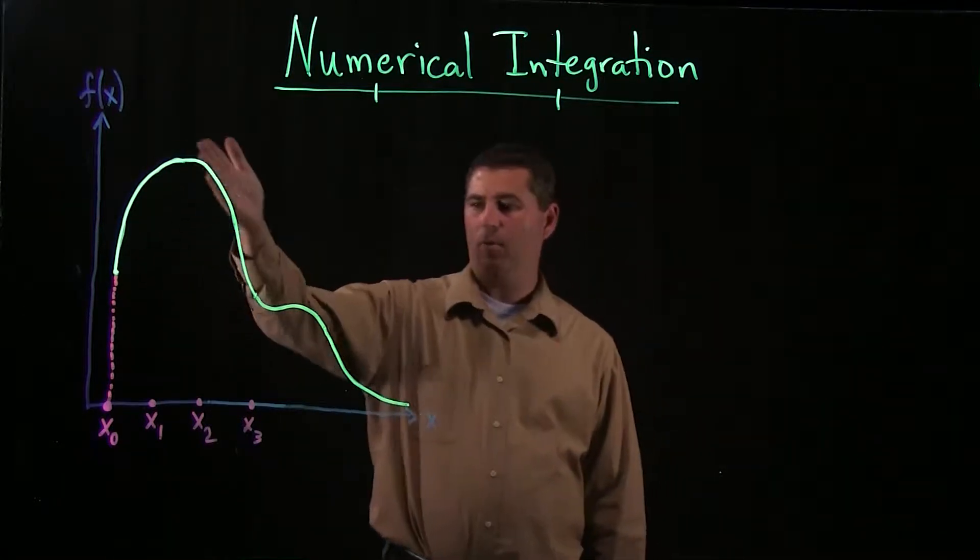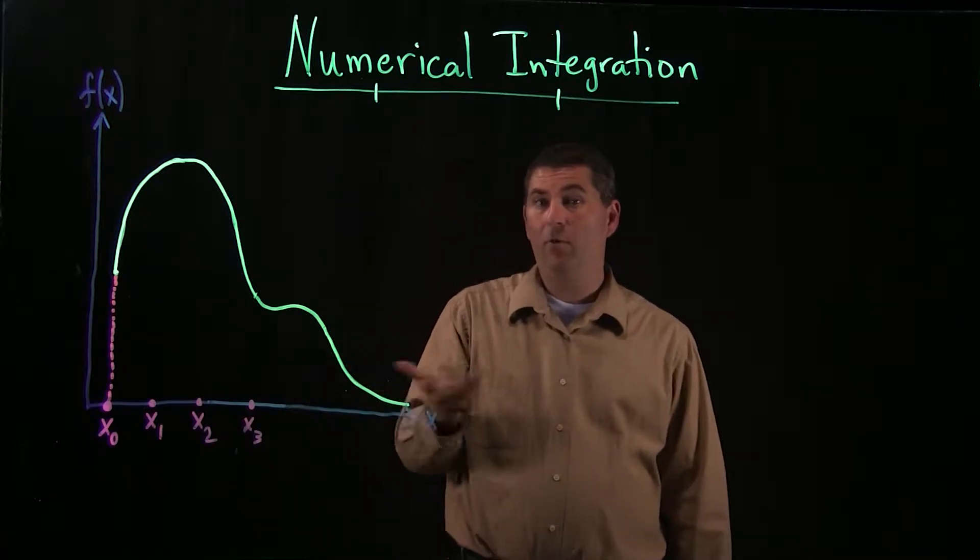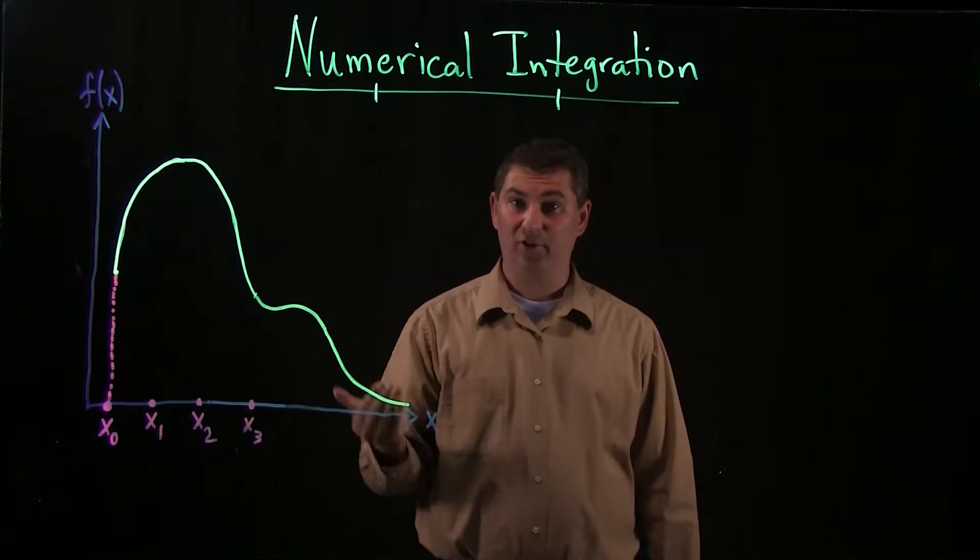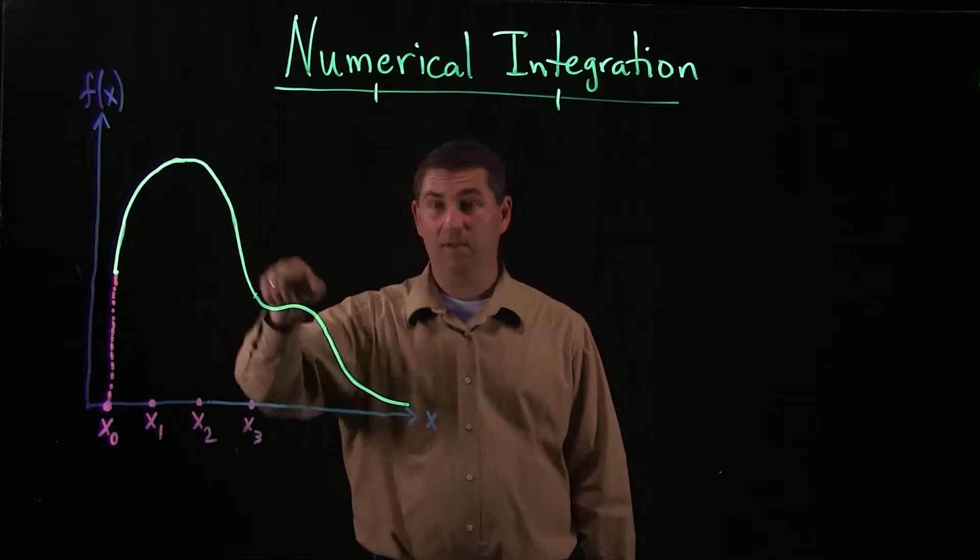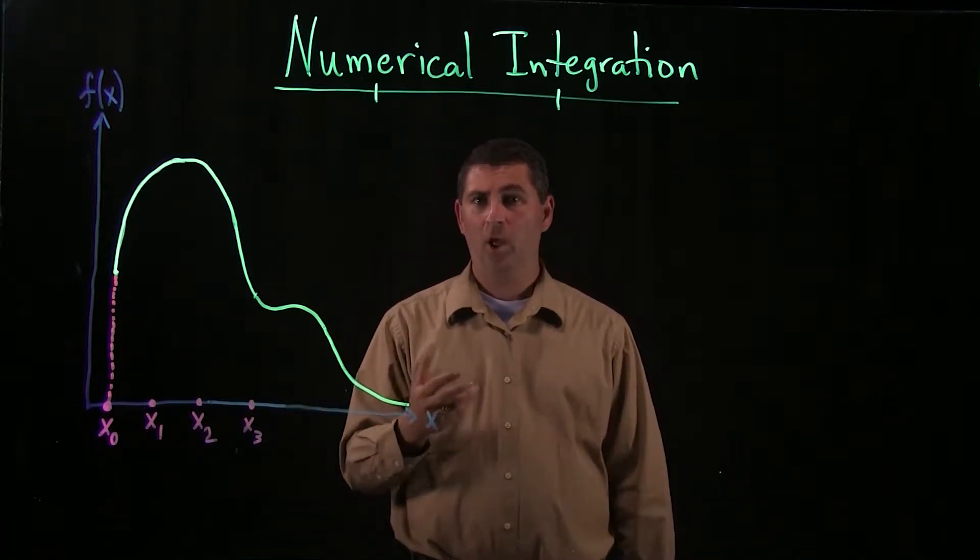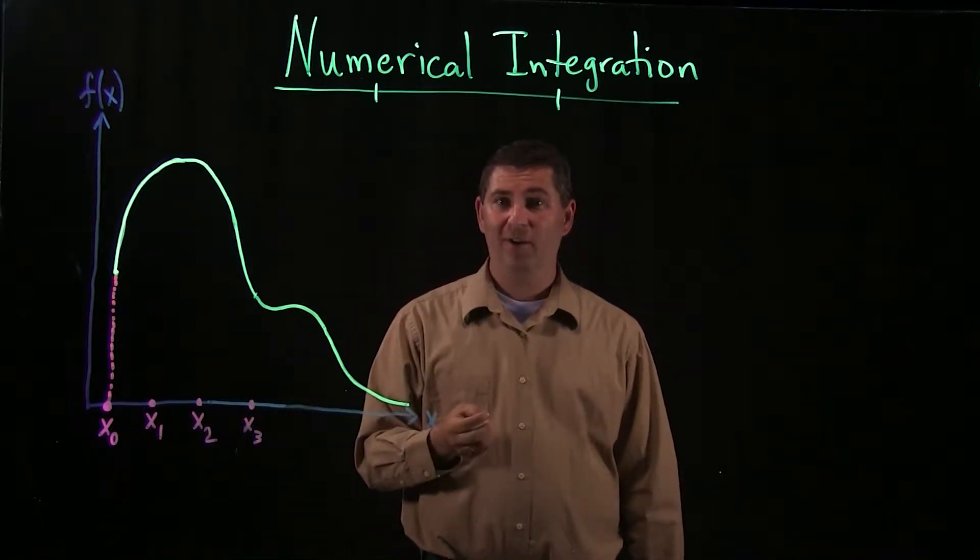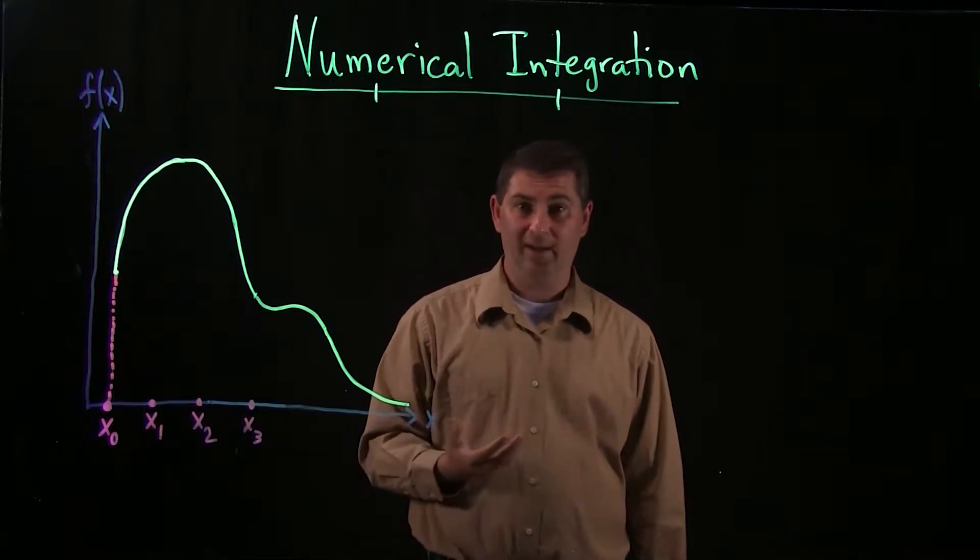For example, say you have a graph of your function, but you don't know what the function actually is. Maybe you know the values at some of these data points, but you don't have a rule for the function. Or maybe you do have a function, but you don't know how to find an antiderivative.